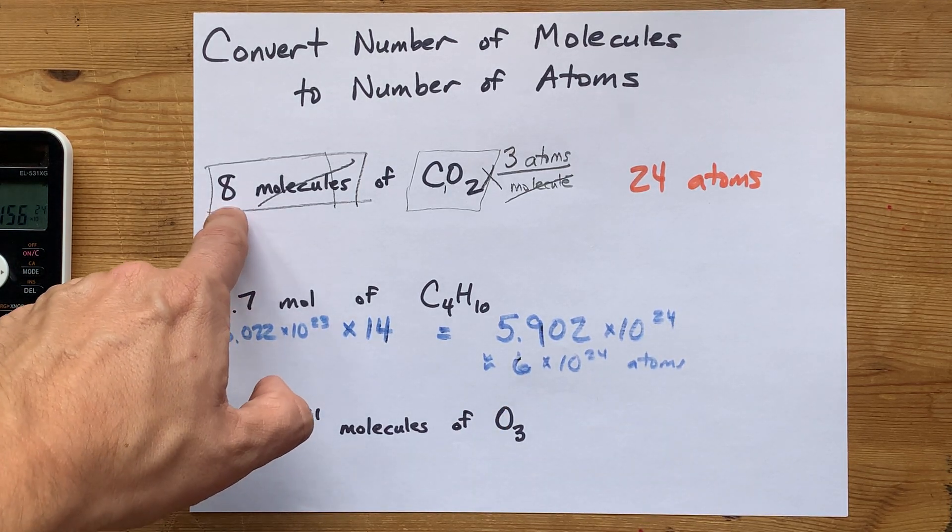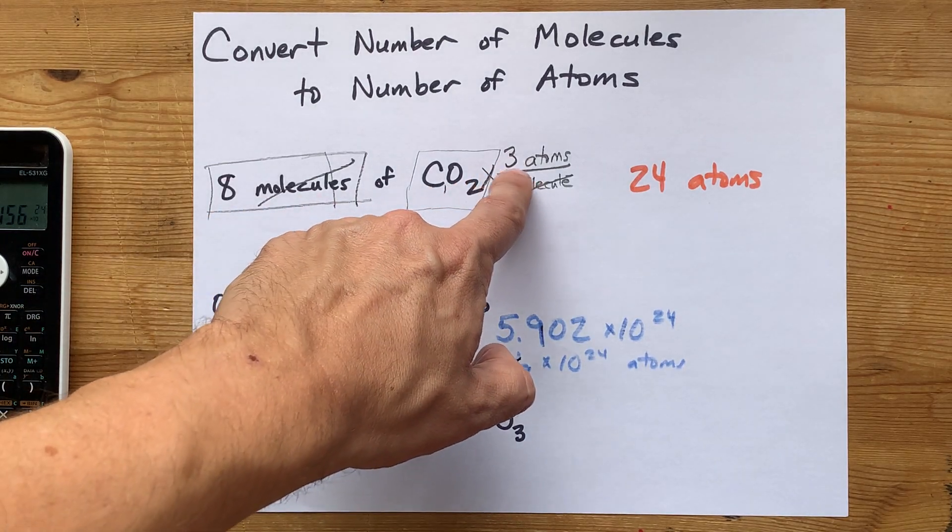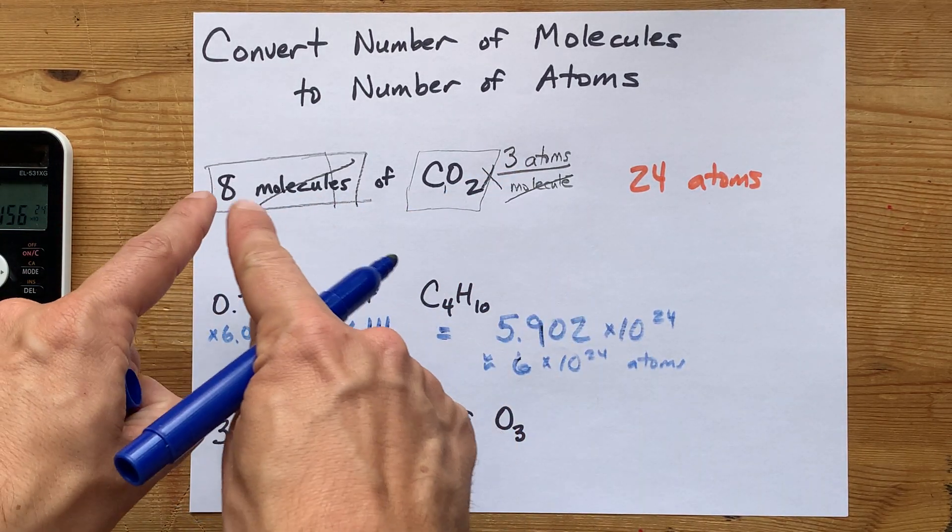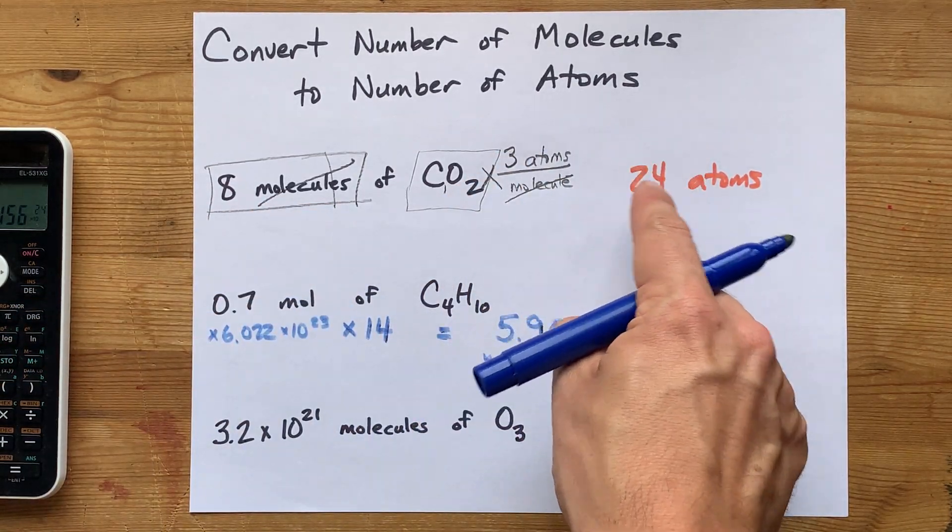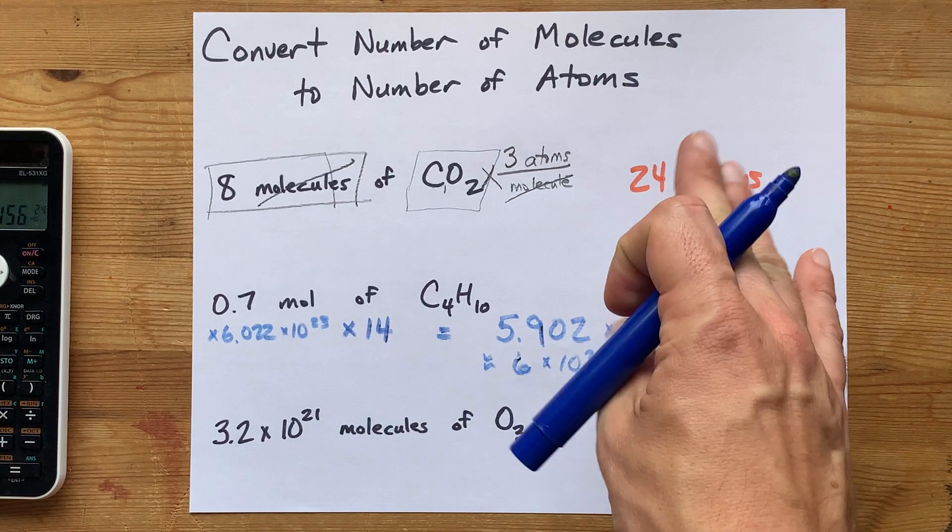This was an exact number, and that's an exact number. There's no rounding to be done there. You just counted how many of those there are, and you counted how many of those there are. So this has infinite significant figures. That's why I didn't have to worry about it there.